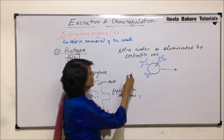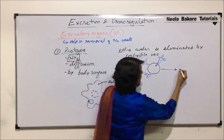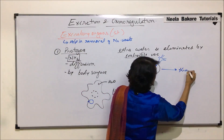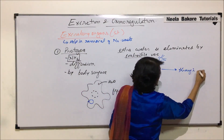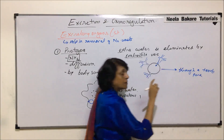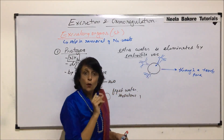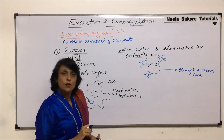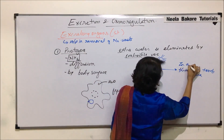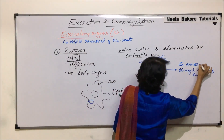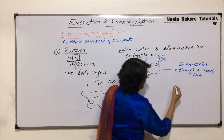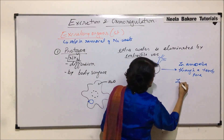In amoeba, the contractile vacuole comes closer to the plasma membrane and water is thrown out through a temporary pore. In paramecium, however, there is a permanent pore through which water is lost.